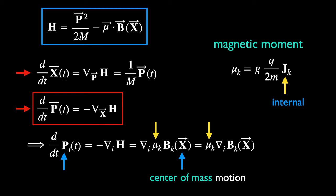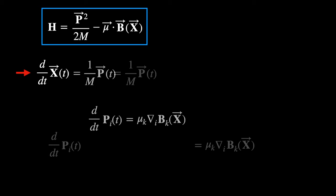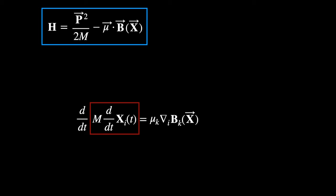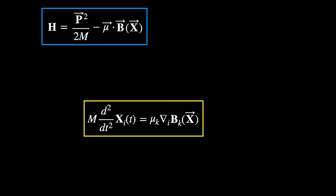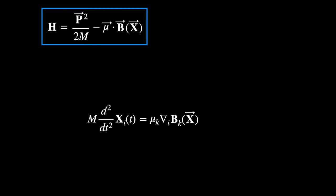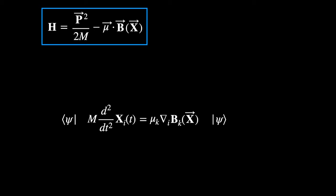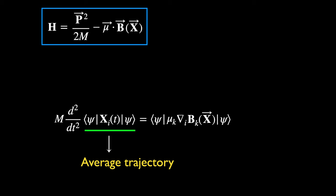Getting back to our calculation of the equations of motion, we combine the two equations and replace the momentum using the first equation, arriving at a second-order differential equation with X as the only center of mass variable. We want to look at the average position of the atom and see how it moves in time, by sandwiching this equation between the state vector of the atom. Since we are in the Heisenberg picture, Ψ is independent of time, so we can bring Ψ into the time derivatives. This bracket gives us the average trajectory of the atom.